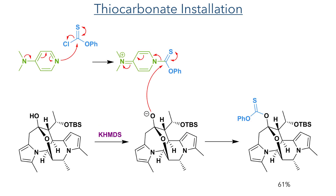Taking this forward, this oxygen was then reacted to form a thiocarbonate group in preparation for Barton-McCombie deoxygenation. Phenylchlorothioformate reacts with DMAP to form an activated thioester, which is more electrophilic than the chlorinated compound. The hemiacetal is deprotonated by potassium HMDS and the alkoxide attacks this activated species, forming the thiocarbonate in a 61% yield.